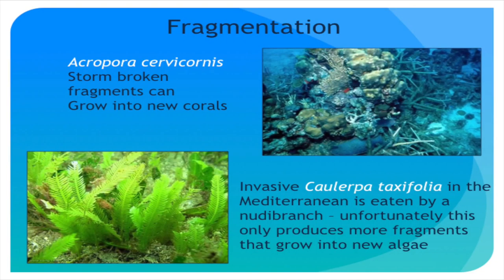Then there's fragmentation. You've seen this in things like spider plants, but it also happens with corals on coral reefs — a storm breaks off pieces and those fragments often grow into whole new colonies. So instead of one branching coral you might end up with a whole little patch reef that's actually all the same individual, though its pieces have no physical connection once they break off.